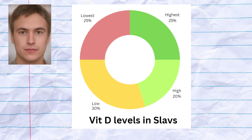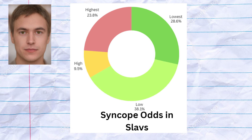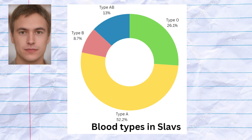The medieval Slavs were predisposed to an average level of vitamin D, and had below average odds of syncope. The most common blood type in medieval Slavs was type A followed by type O, although 3 samples did also belong to type AB and 2 samples to type B.